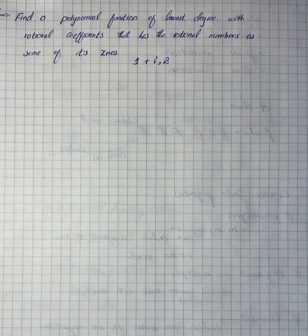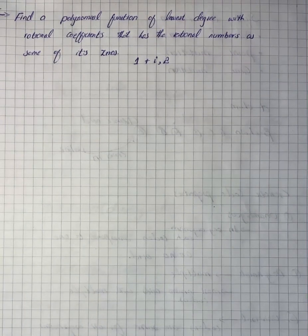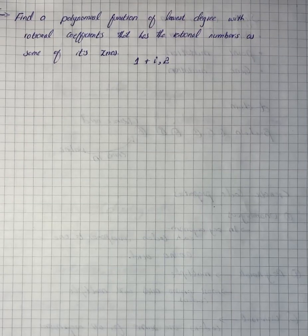The question says find a polynomial function of lowest degree with rational coefficients that has the given numbers as some of its zeros. We have a condition over here and the given numbers are 1 plus i, where i is a constant, and 2. Complex zeros come in conjugate pairs, so we know that 1 minus i is the third zero.